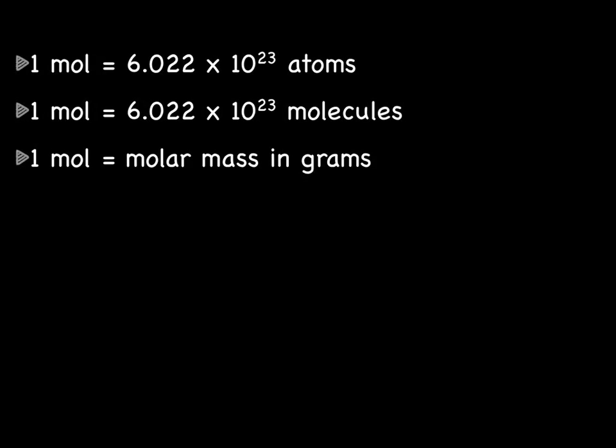First we have the list of equalities that we have used so far this unit. We have one mole equals 6.022 times 10 to the 23rd atoms, one mole equals 6.022 times 10 to the 23rd molecules, and one mole equals the molar mass in grams. I would suggest you write these down so you have them in front of you as we proceed with the lecture.